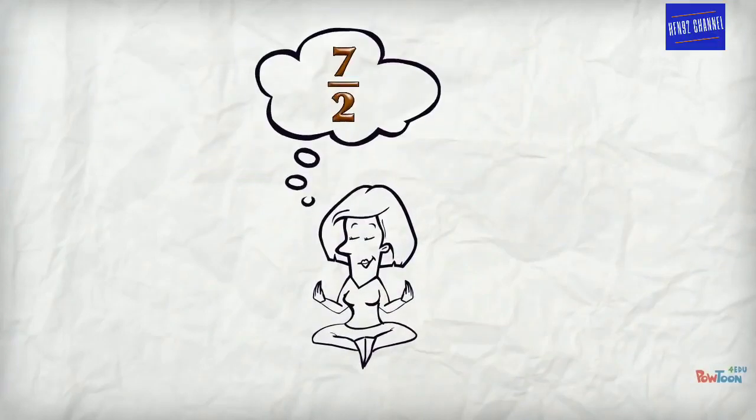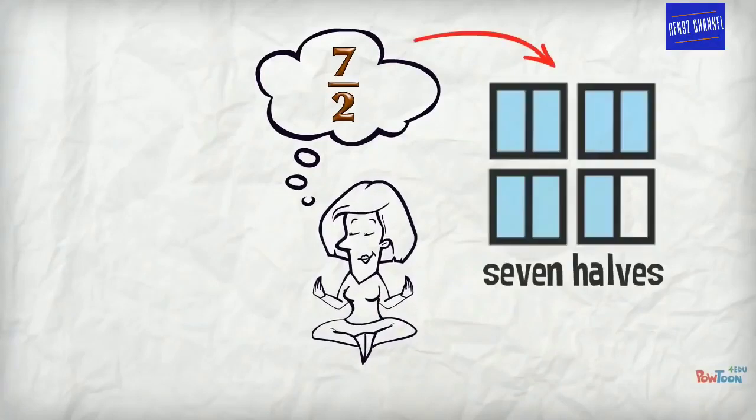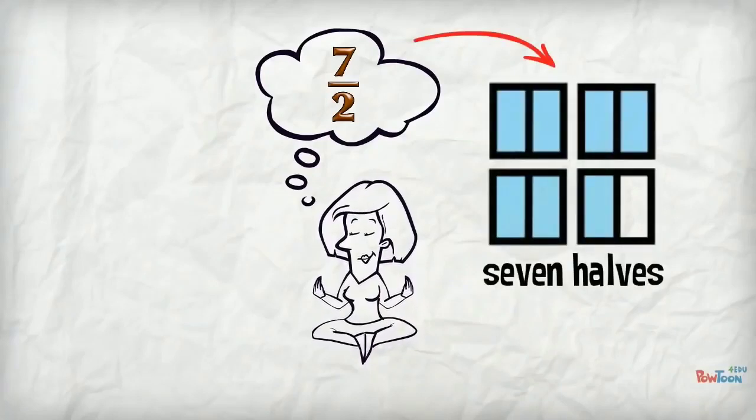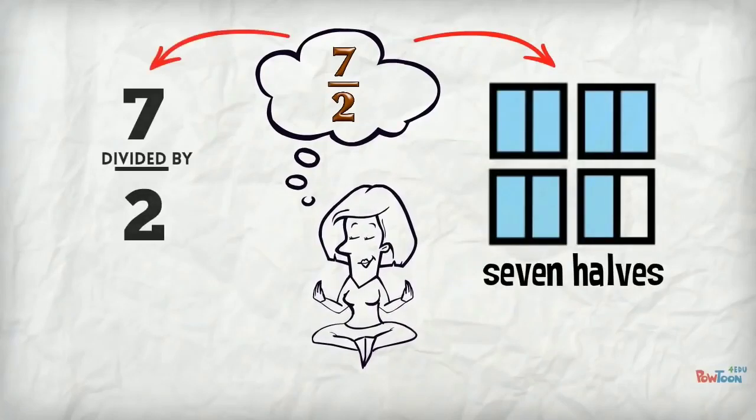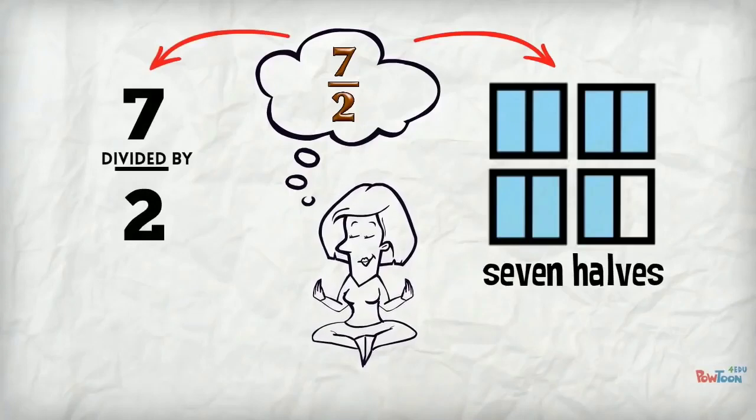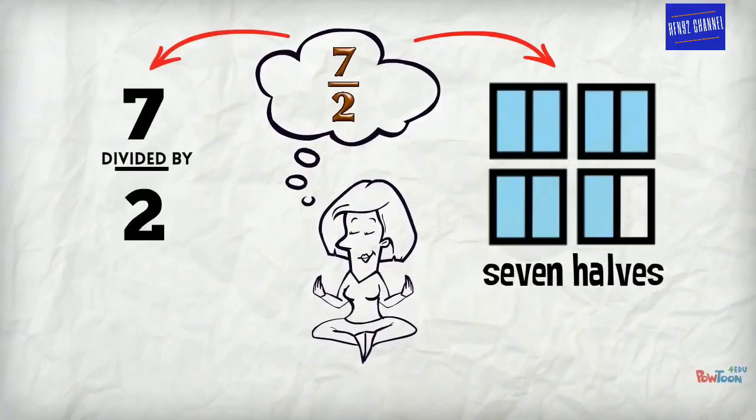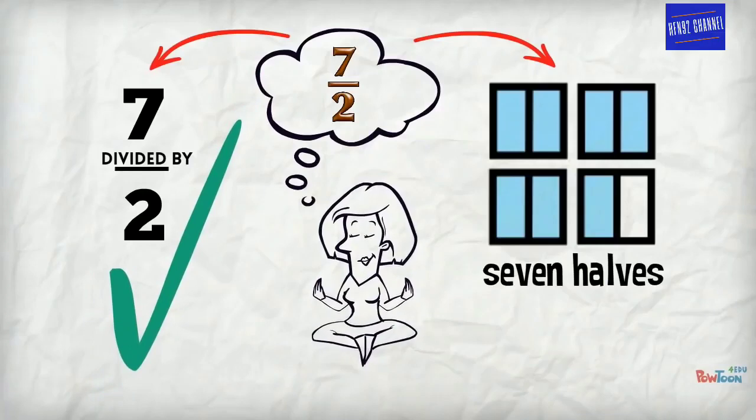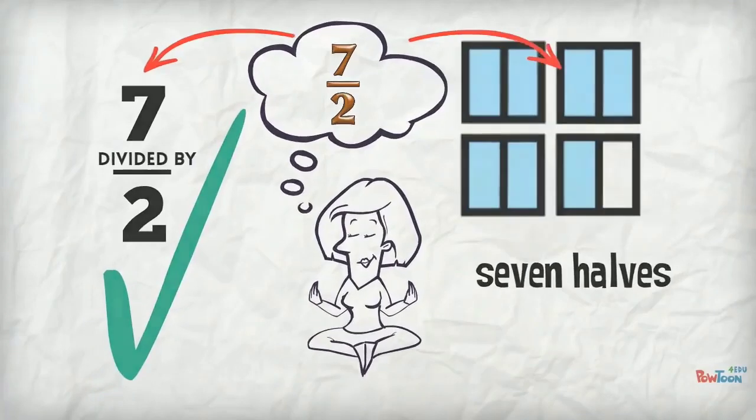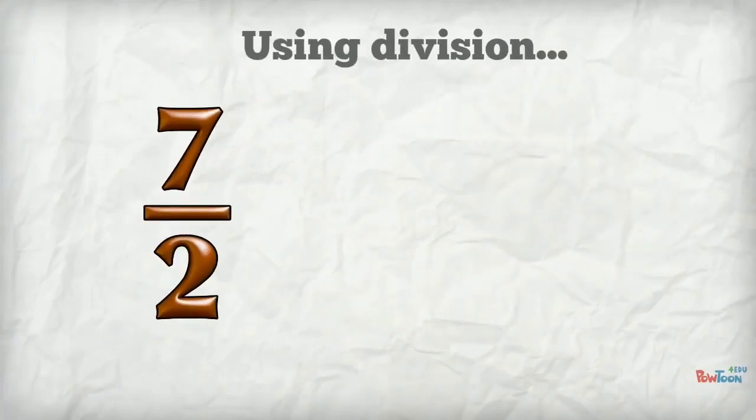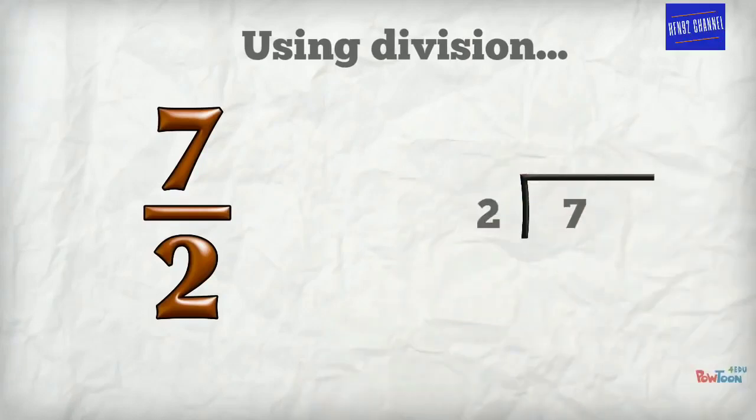Let's think. Seven over two means seven halves. And it also means seven divided by two. When we're changing an improper fraction to a mixed number, this is the fastest way to work with it. Using division, seven divided by two. Three twos are six and there's a remainder of one.